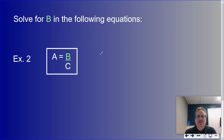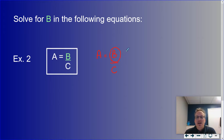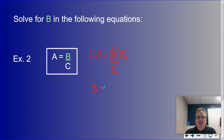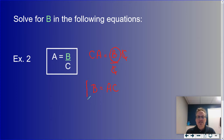Now let's do A equals B over C, still solving for B. Currently we're dividing by C, so the opposite is multiplying. Whatever I do to one side I do to the other, so I multiply both sides by C. On the right-hand side, C on top and bottom cancel out, leaving B equals A times C. Note that order of multiplication doesn't matter, so A times C and C times A mean the same thing.